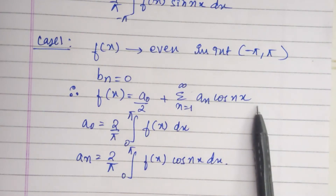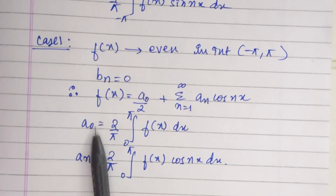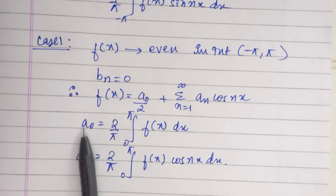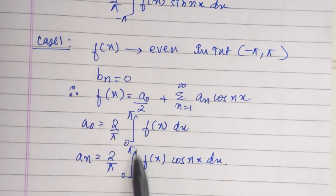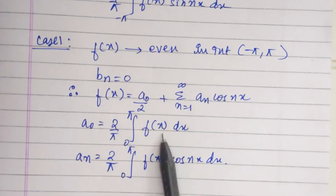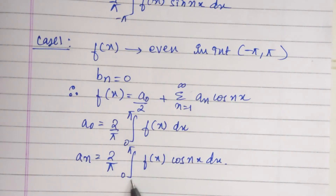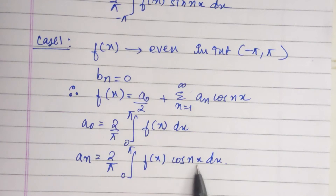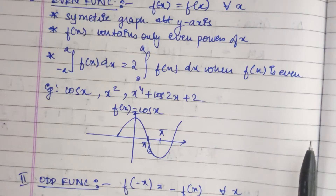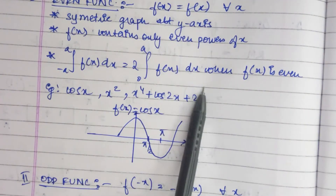Because b n equals 0, f of x contains only cosine terms. The coefficients simplify to: a naught equals 2 by pi times the integral from 0 to pi of f of x dx, and a n equals 2 by pi times the integral from 0 to pi of f of x cos nx dx. These two formulas are obtained by using the even function property.